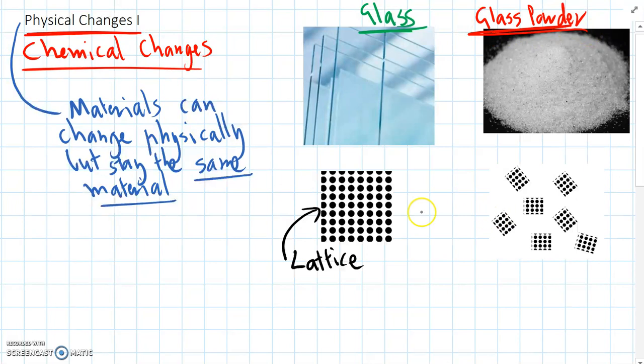And what we've done there is we've taken the big lattice and broken it up into small pieces that are still made of atoms and they're still made of the same glass atoms themselves, the same glass molecules. All we've done is broken up the pieces.